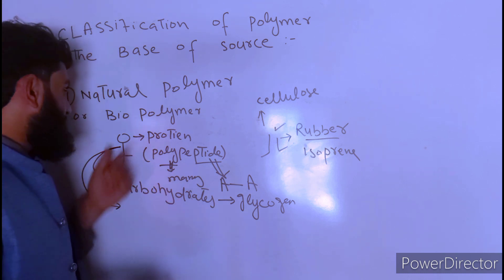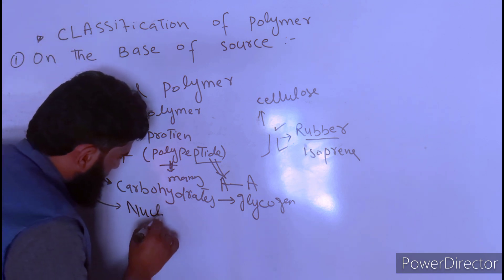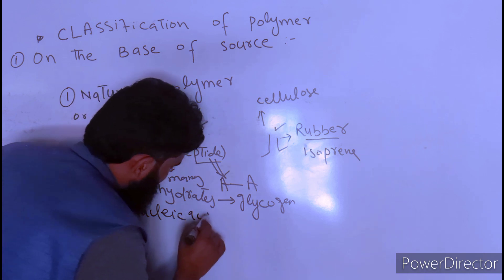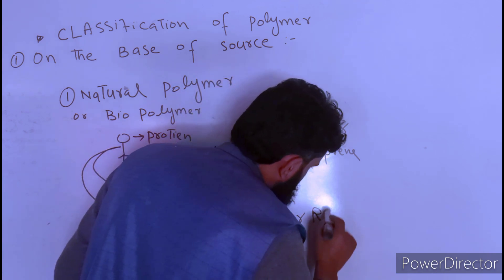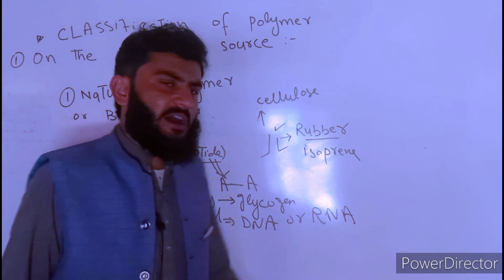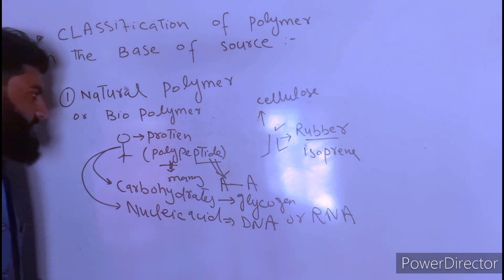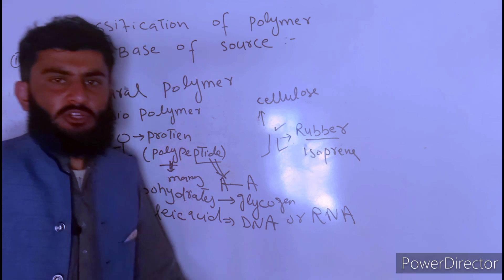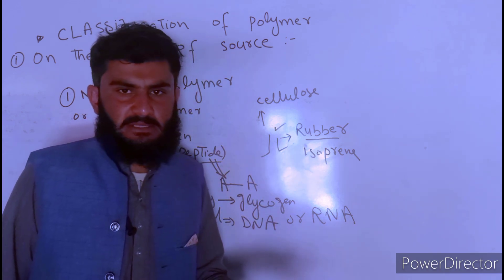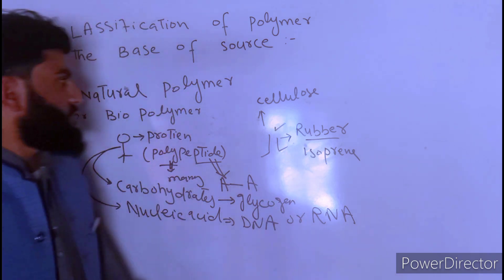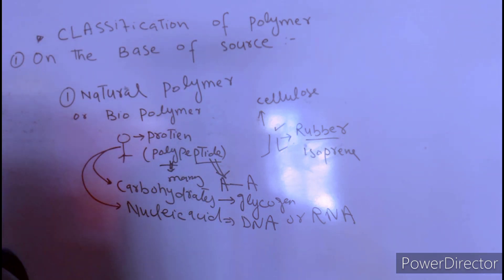Another component involved in the composition of animals and human beings is nucleic acids — DNA and RNA. DNA and RNA are actually polymers of nucleotides. These are the examples of natural polymers, which are obtained from living organisms directly.